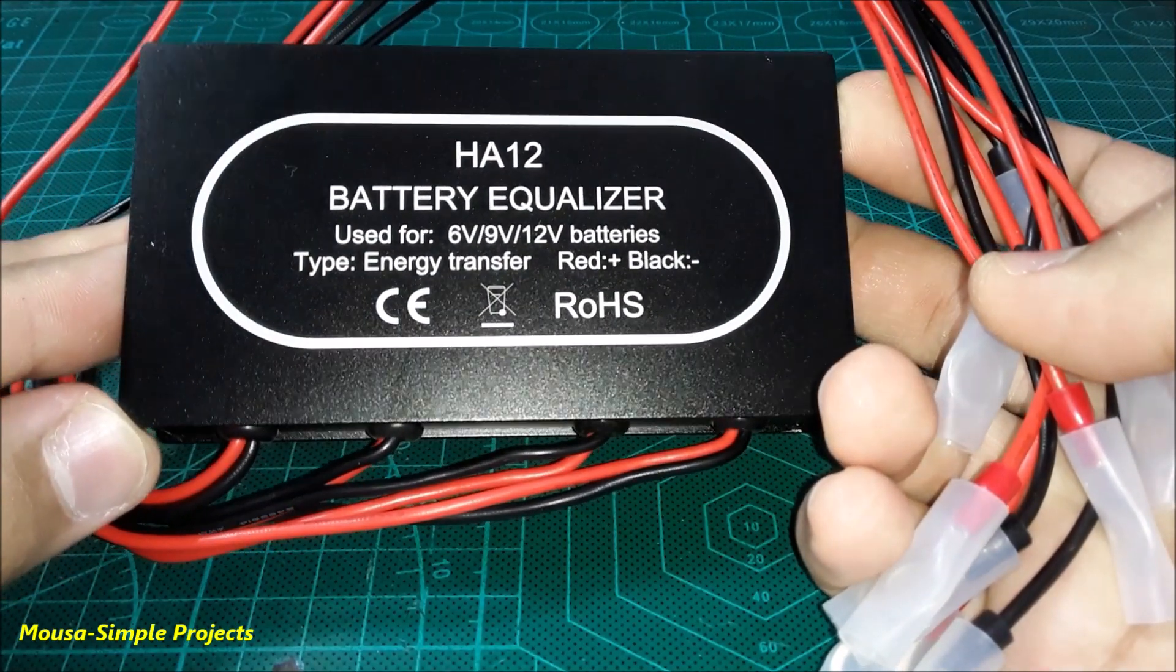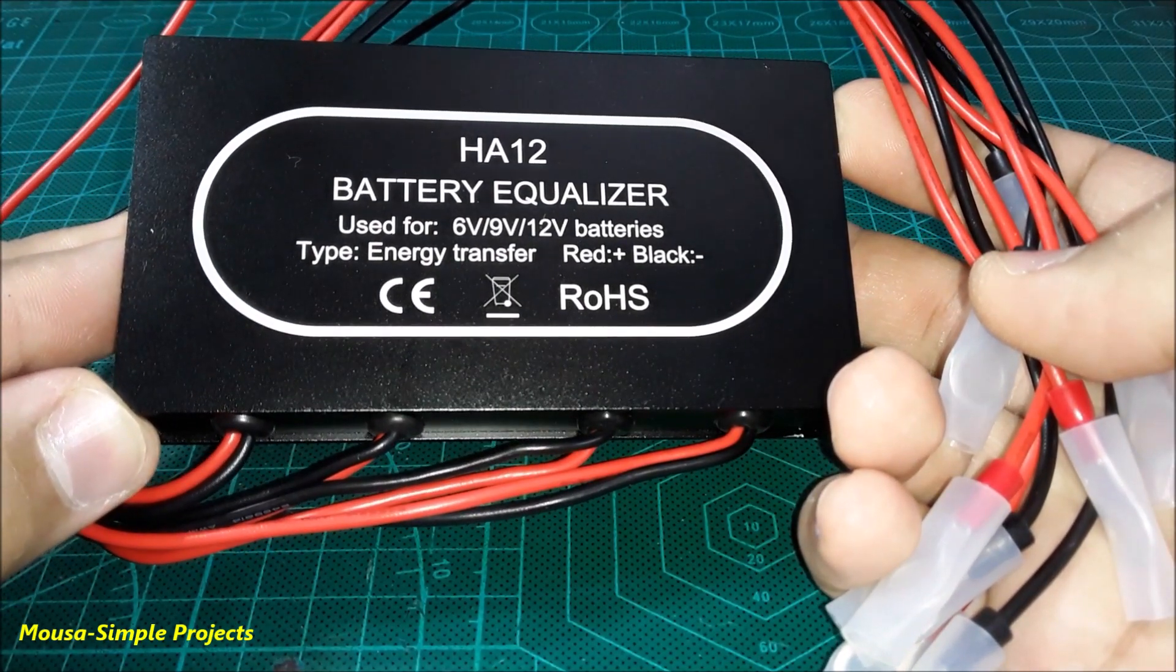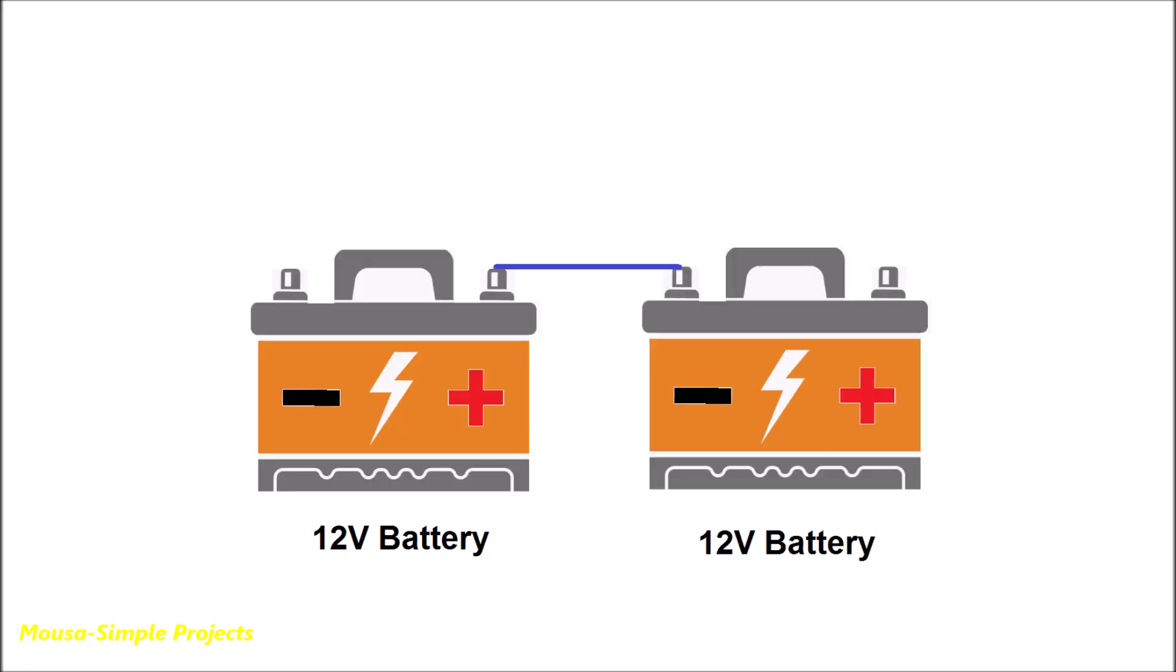In this video I want to talk about battery equalizers and I'm trying to test this one here. When you connect some batteries together in series and start to charge or discharge them together, you will find that the voltage of each battery is different than the other. These imbalanced voltages can decrease the lifespan of your batteries.